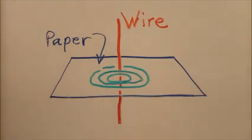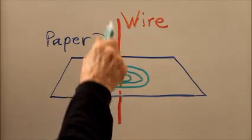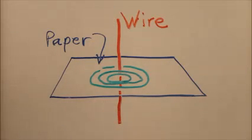They will form circles, or they will tend to bunch themselves in concentric circles on the paper, all centered on the point where the wire passes through the paper.